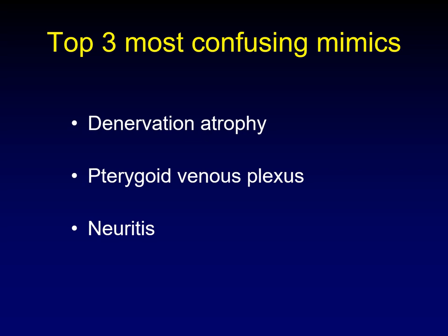Looking back at the top three most confusing mimics of perineural spread: first, denervation atrophy — particularly of the muscles of mastication, where it is most confusing. Second, the pterygoid venous plexus, because it can be so asymmetric and make you think there's something on one side and not the other. Third, an inflammatory or infectious neuritis with slight enhancement along the entire course of a nerve — in the setting of Bell's palsy, this is the most confusing for everybody and a tough conundrum.